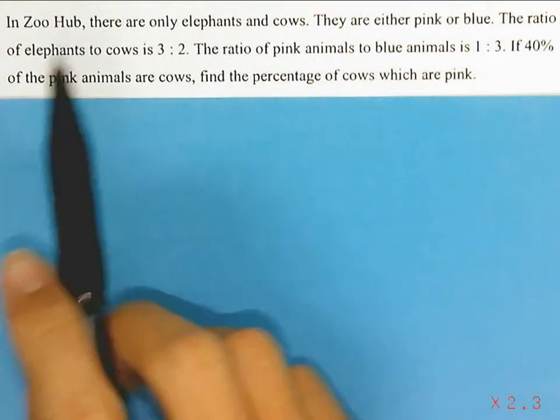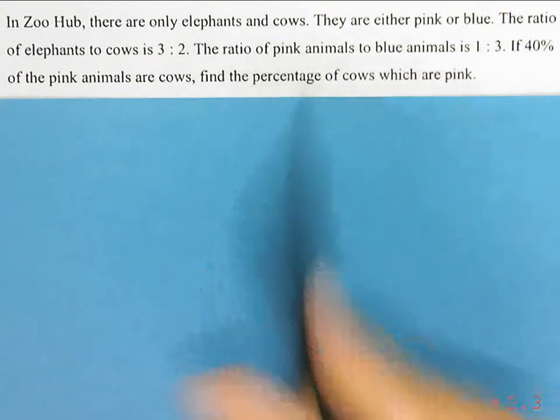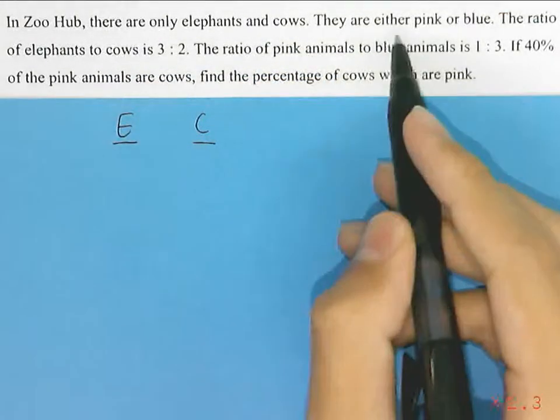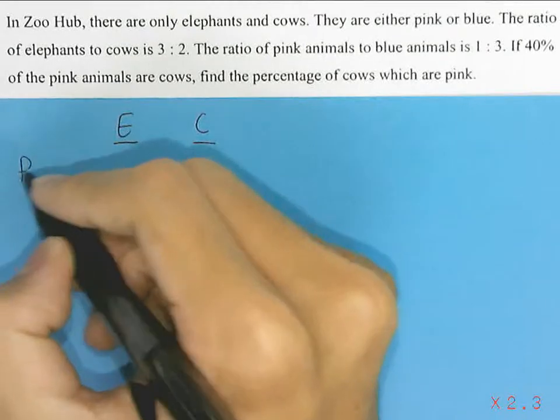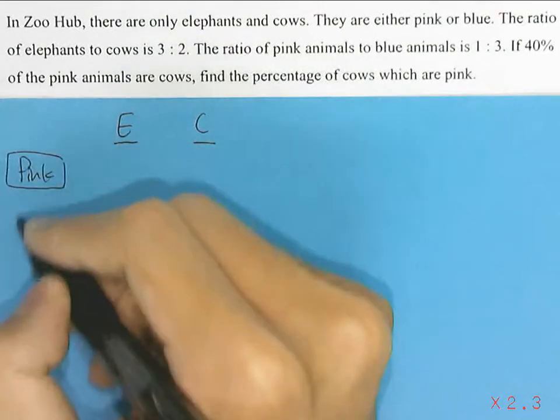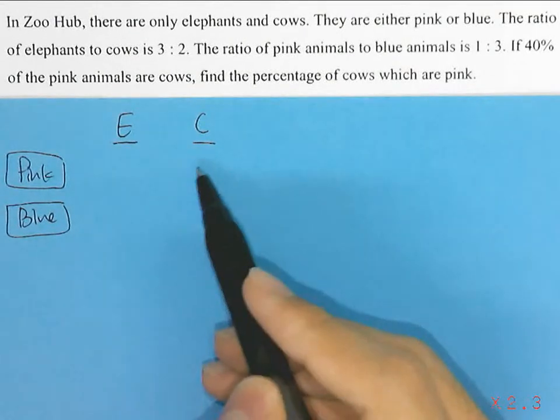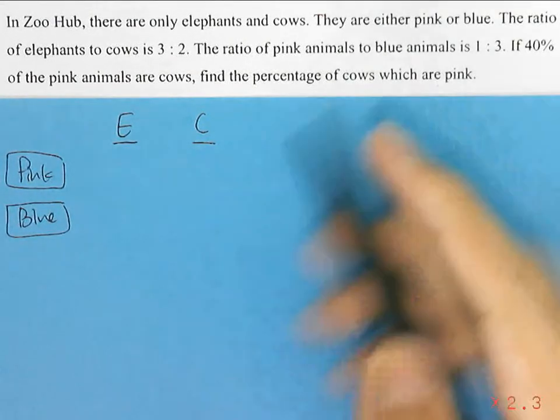In Zoo Hub, there are only elephants and cows, so E for elephants and C for cows. They are either pink or blue, so we have pink elephants, blue elephants, pink cows, and blue cows.